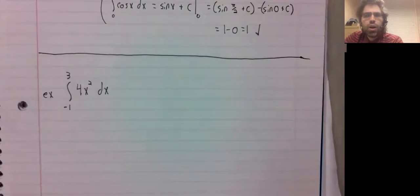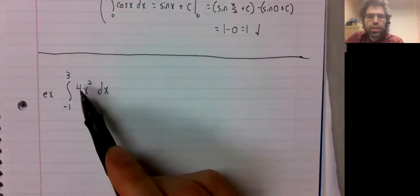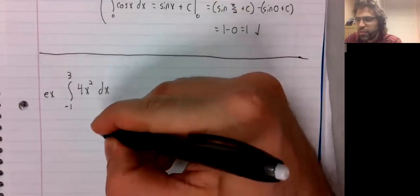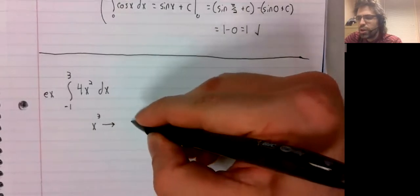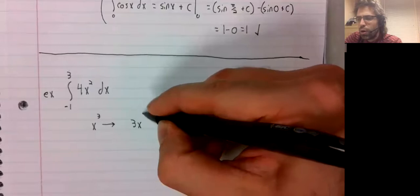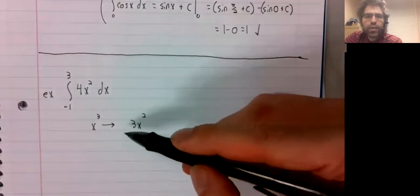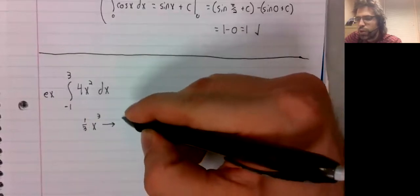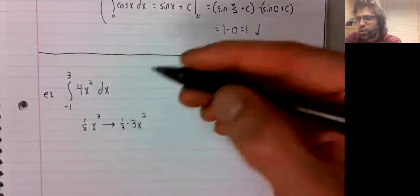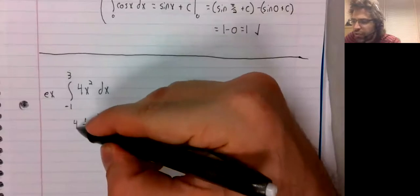Depending on how confident we're feeling, we might need to do a little work computing this antiderivative. X cubed is almost what we want, in the sense that it will give us an x squared when we differentiate it. But we don't want that one third, and we do want a four.